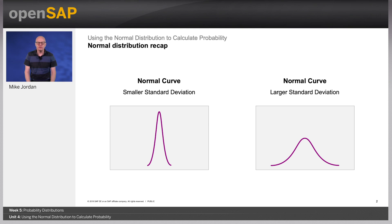The normal distribution refers to a family of continuous probability distributions. The graph of the normal distribution depends on two factors: the mean and the standard deviation. The mean of the distribution determines the location of the centre of the graph, and the standard deviation determines the height and width of the graph. All normal distributions look like a symmetric bell-shaped curve.